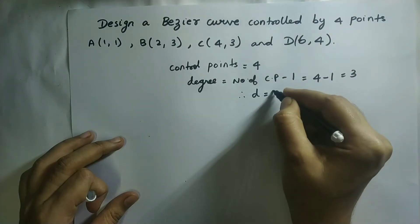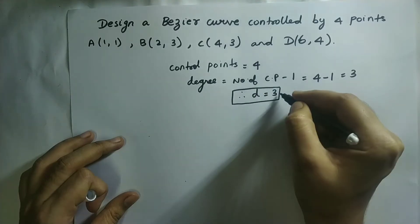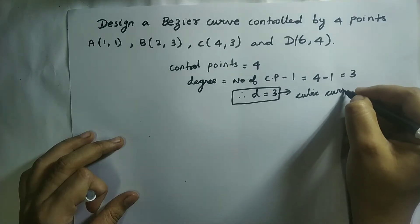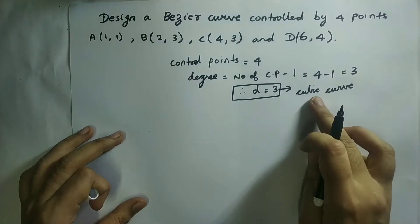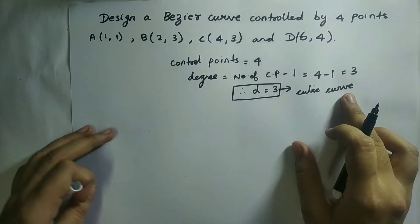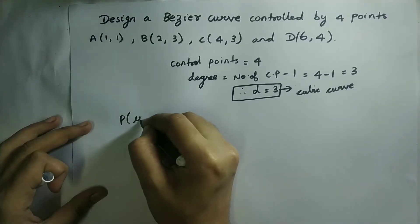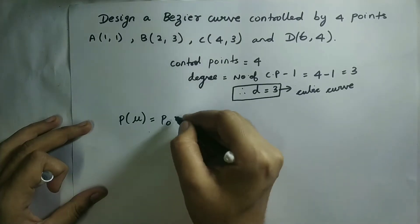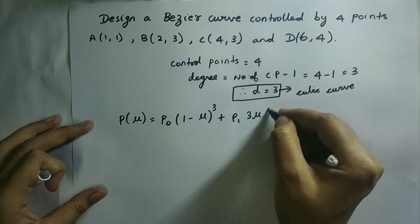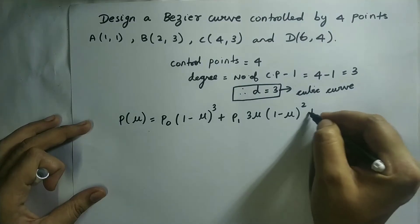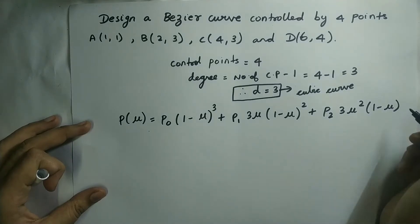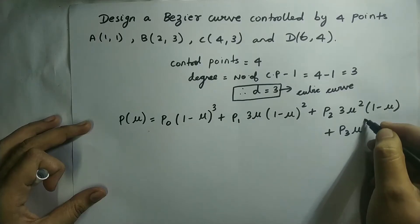Therefore, degree D is equal to three. Three means it is a cubic curve. We already found the equation of the cubic curve in the previous video. The equation is P(u) = P0·(1−u)³ + P1·3u·(1−u)² + P2·3u²·(1−u) + P3·u³.